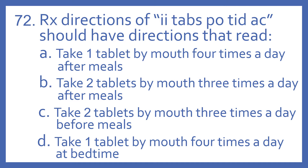Number 72. Rx directions of IITABS should have directions that read: A. Take one tablet by mouth four times a day after meals. B. Take two tablets by mouth three times a day after meals. C. Take two tablets by mouth three times a day before meals. Or D. Take one tablet by mouth four times a day at bedtime.